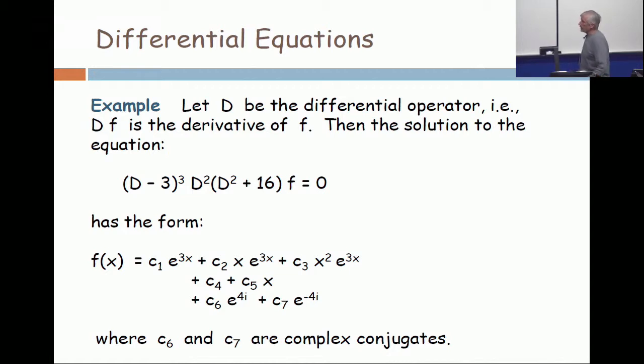So I've given two real roots. Three is a root of multiplicity three. Zero is a root of multiplicity two. And then I've got an irreducible quadratic as a third factor because I want to illustrate how it blends with the complex number system.